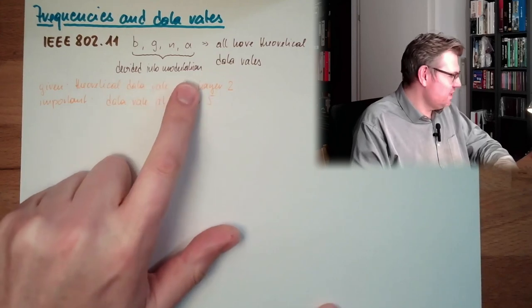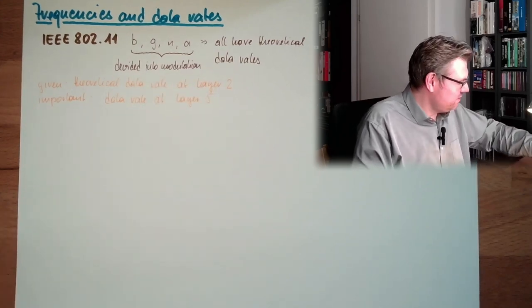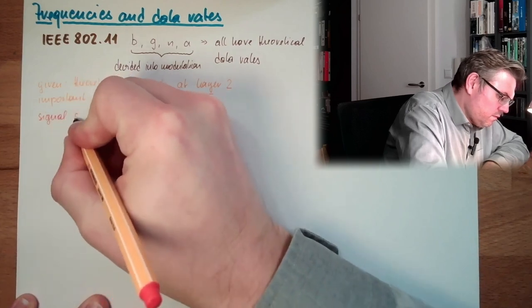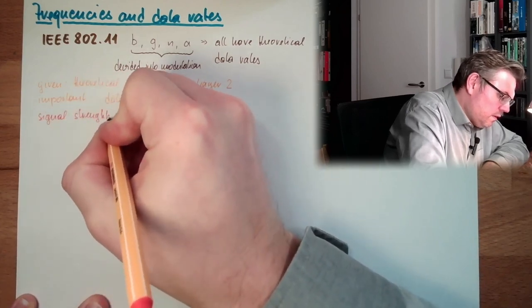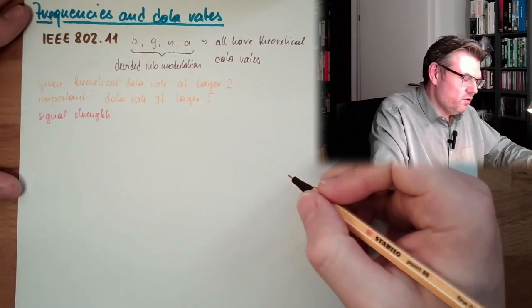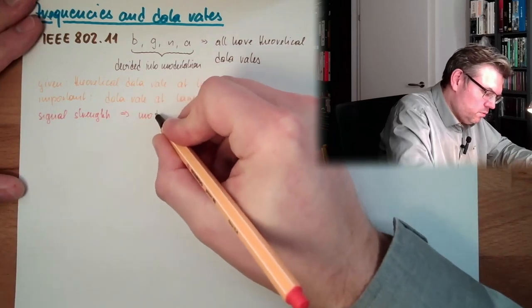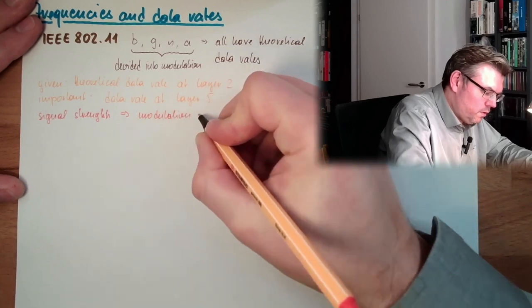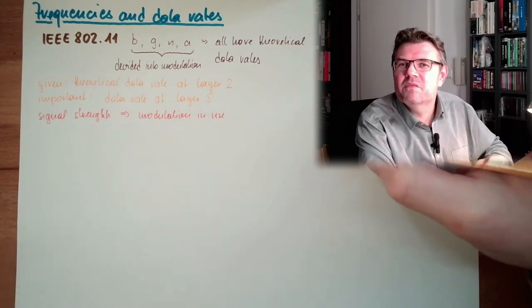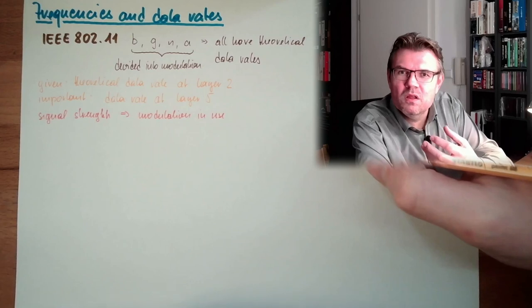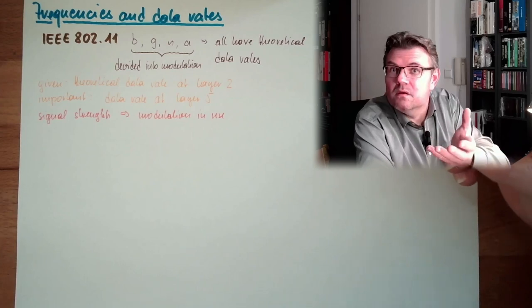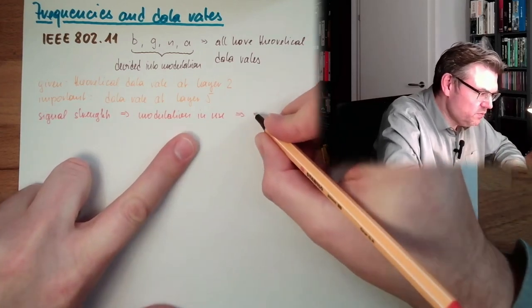The modulation: we have the signal strength, and depending on the signal strength, the standard is given a certain modulation. Depending on the modulation, we have different data rates because sometimes I can send with one symbol some bits and sometimes I can send with one symbol one bit. So the modulation in use has direct influence to the data rate.